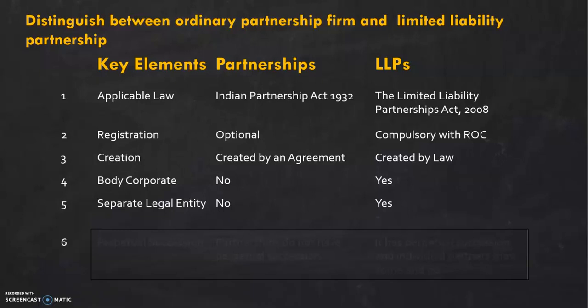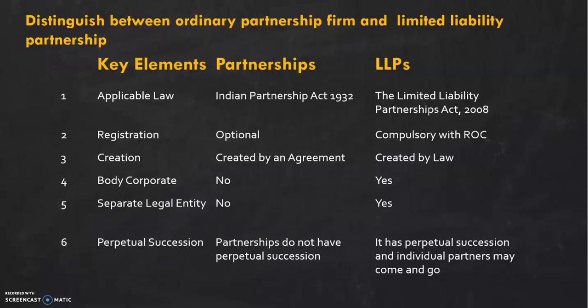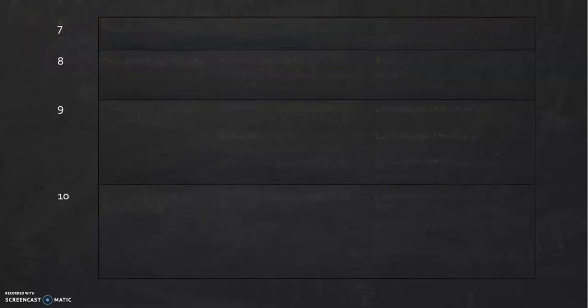Does a partnership have perpetual succession? No. Partnerships do not have perpetual succession, but LLPs do. Individual partners can come or go — it's like men may come, men may go — but the LLP will continue.